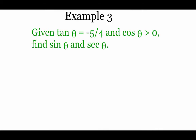In example 3, the tangent of theta is negative five-fourths and the cosine is positive. Since cosine is positive in quadrants one and four, and tangent is negative only in quadrant four, we must be in quadrant four. I'll draw a picture of a fourth-quadrant angle to help work this out.